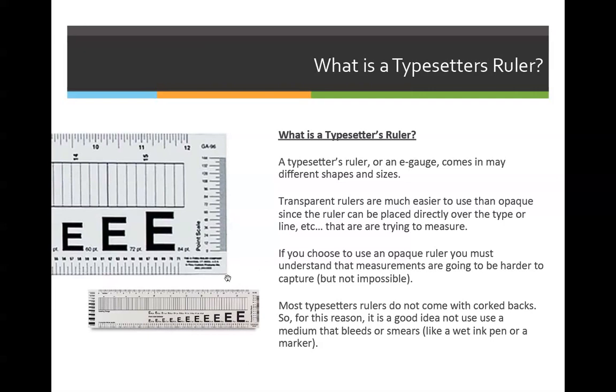But if I choose one that's like the one down here and I can see through it, I'll be able to put the E right on top of the letter I'm trying to measure and I can measure it more precisely. Also, since typesetter rulers usually are transparent, they will not come with a corked back because that would make it opaque.